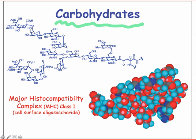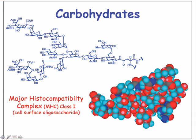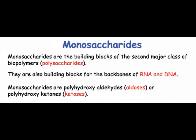Carbohydrates are built from monomers called monosaccharides, or sugars. Like the amino acids, monosaccharides contain both nucleophilic and electrophilic functional groups, and may undergo polymerization to form biopolymers called polysaccharides.